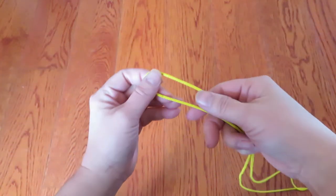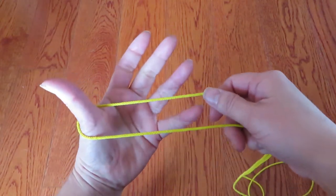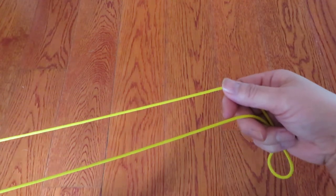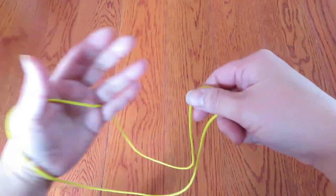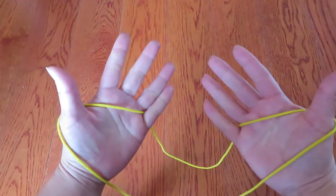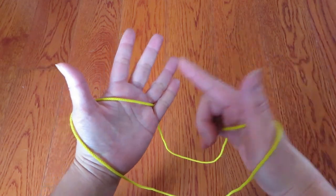First, one end of the loop hook on thumb and pinky of left hand and keep these two strings parallel. In the other end of the loop, hook on thumb and the pinky of right hand.